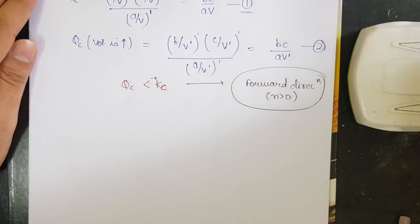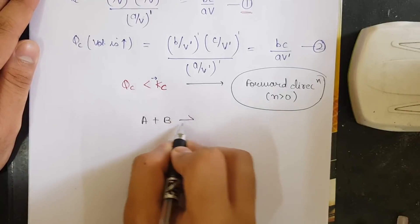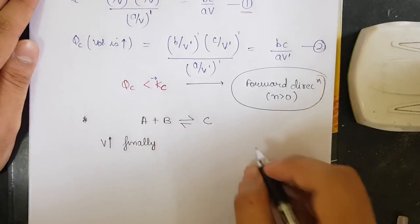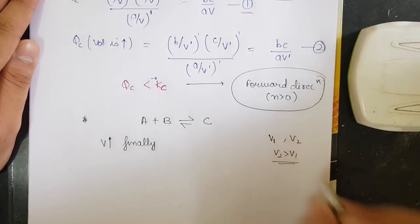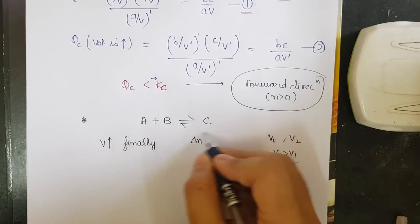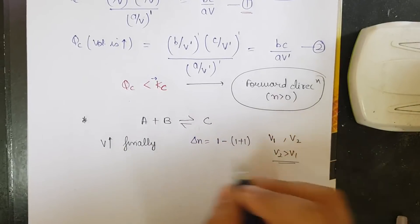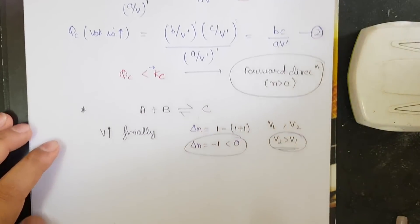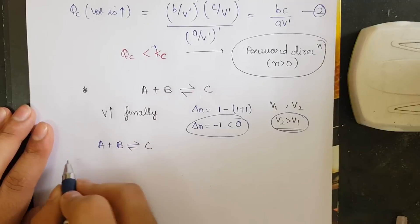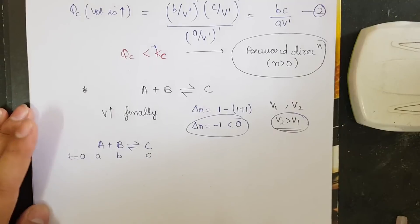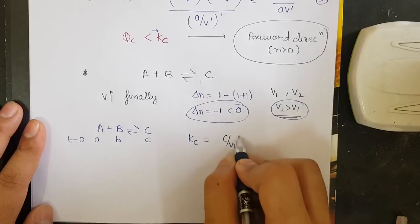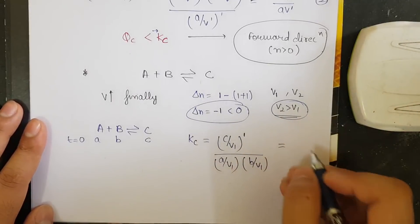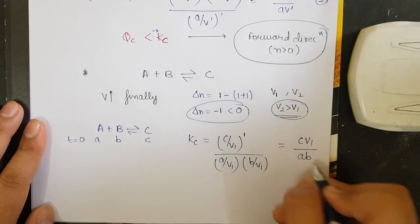Now take case two: A + B → C, with volume increased so V2 > V1. Delta n = 1 − (1+1) = −1, which is less than zero. We calculate Kc = (C/V1) / [(A/V1)(B/V1)]. The V1 terms cancel to give Kc = C·V1 / (A·B). Let this be equation number one.